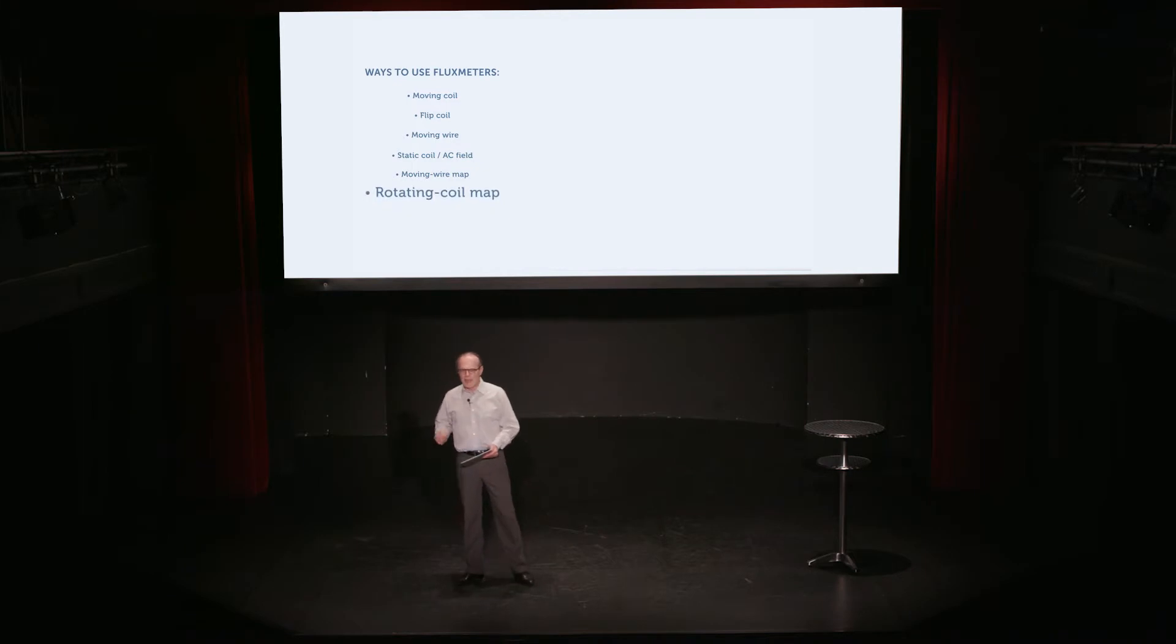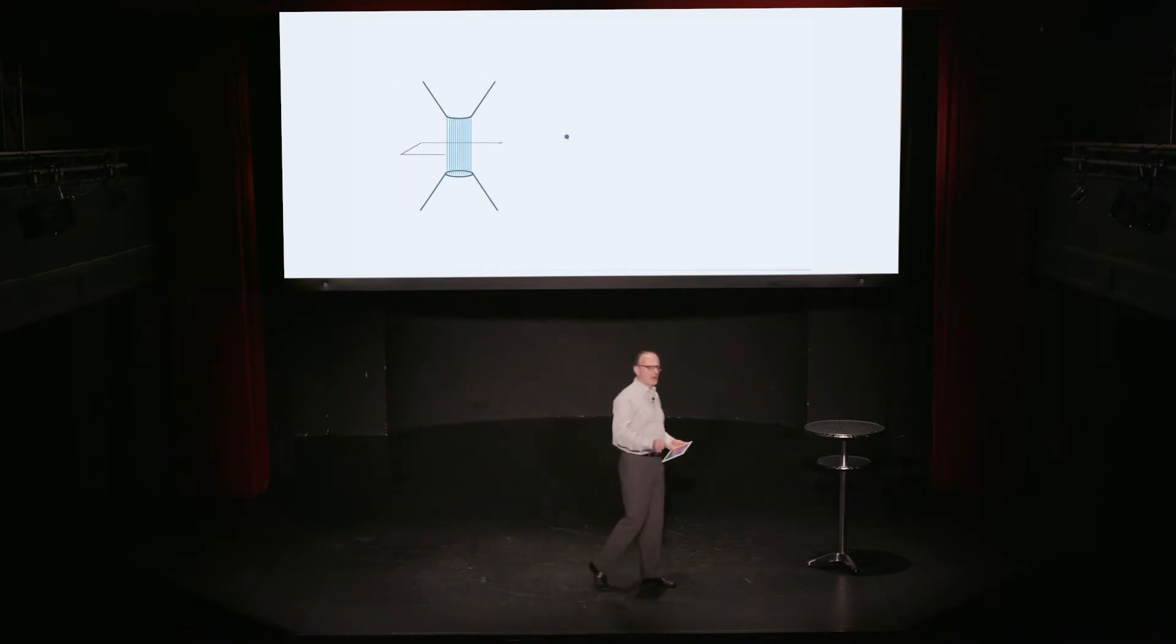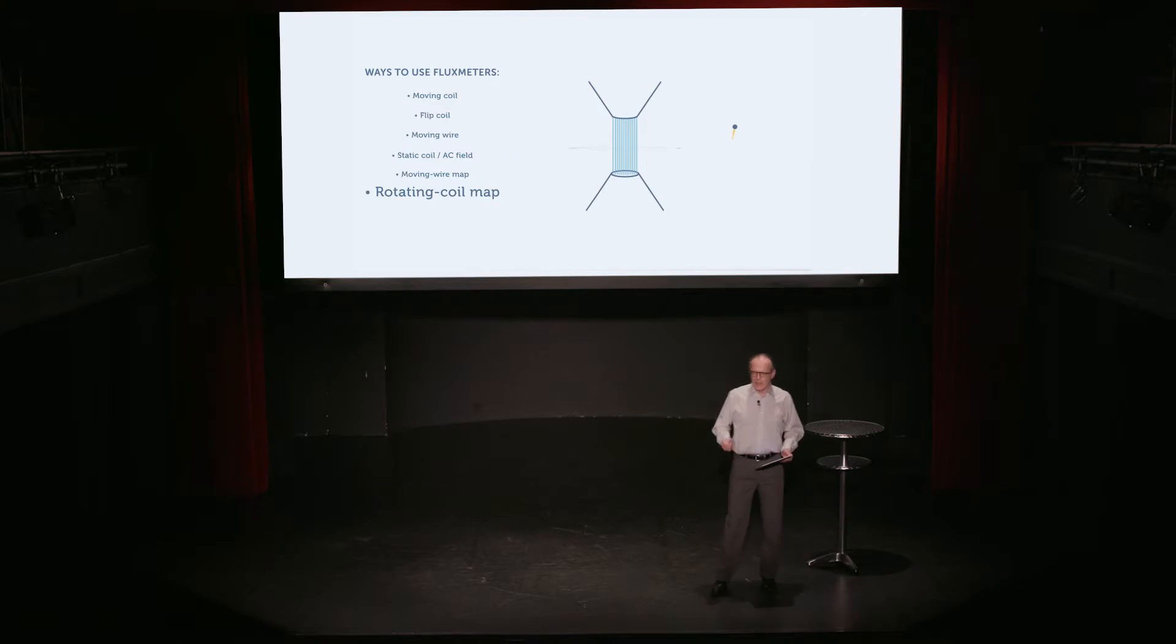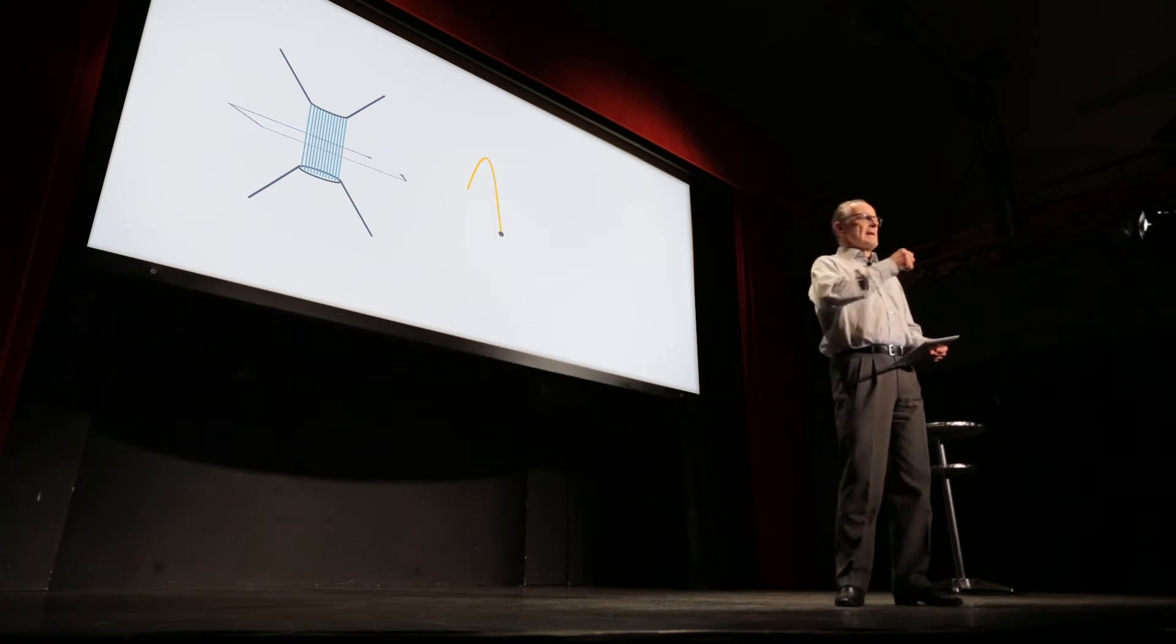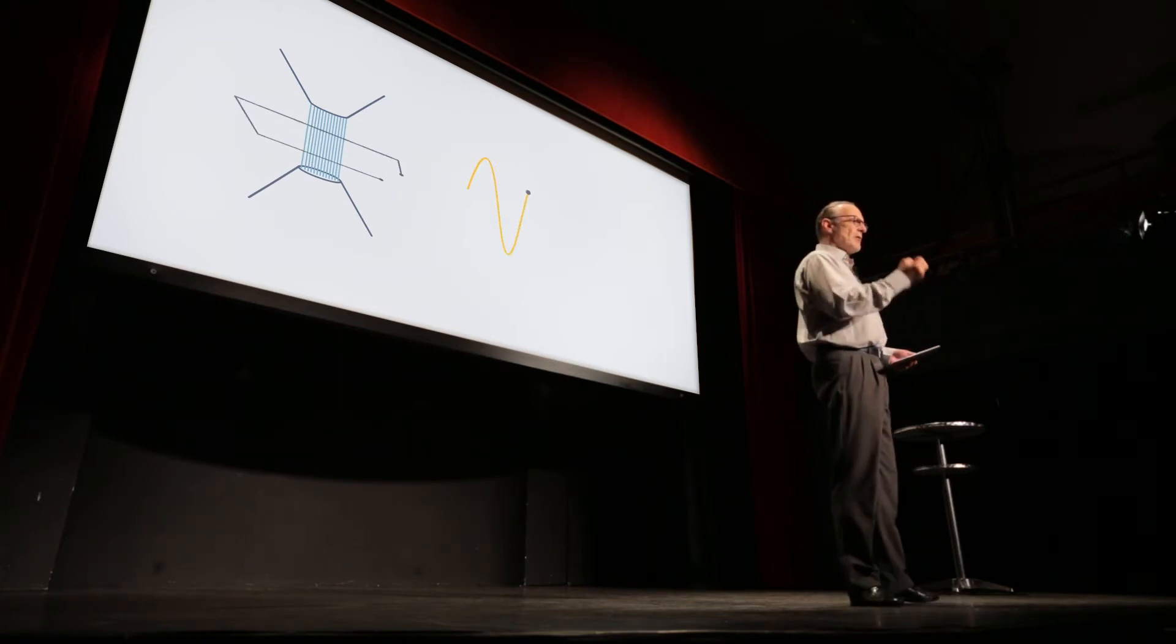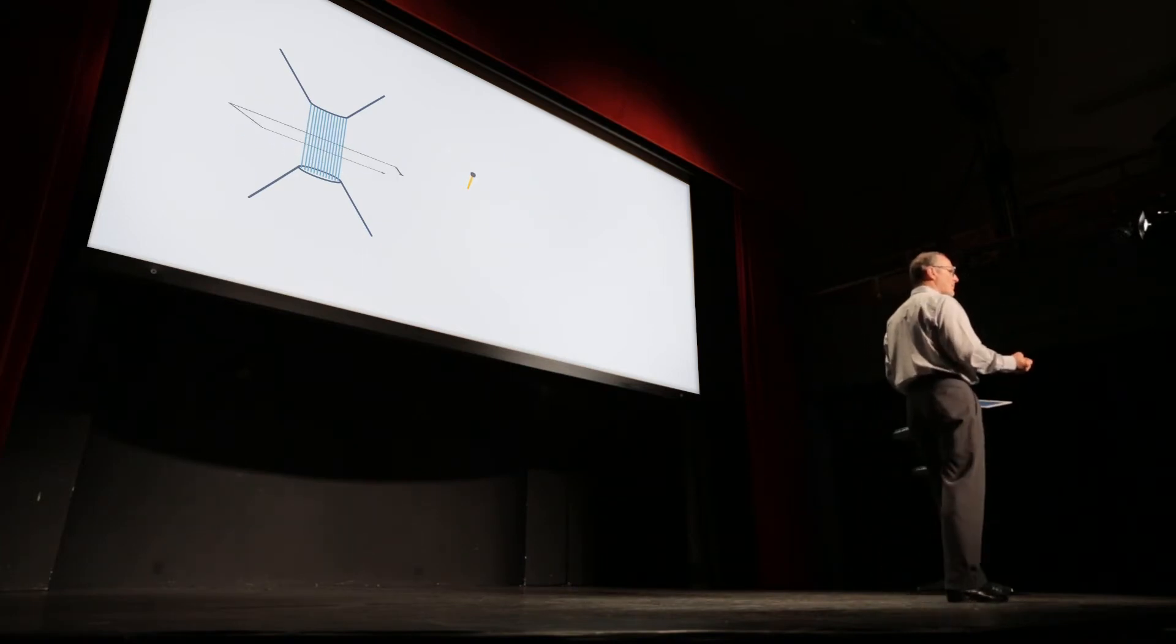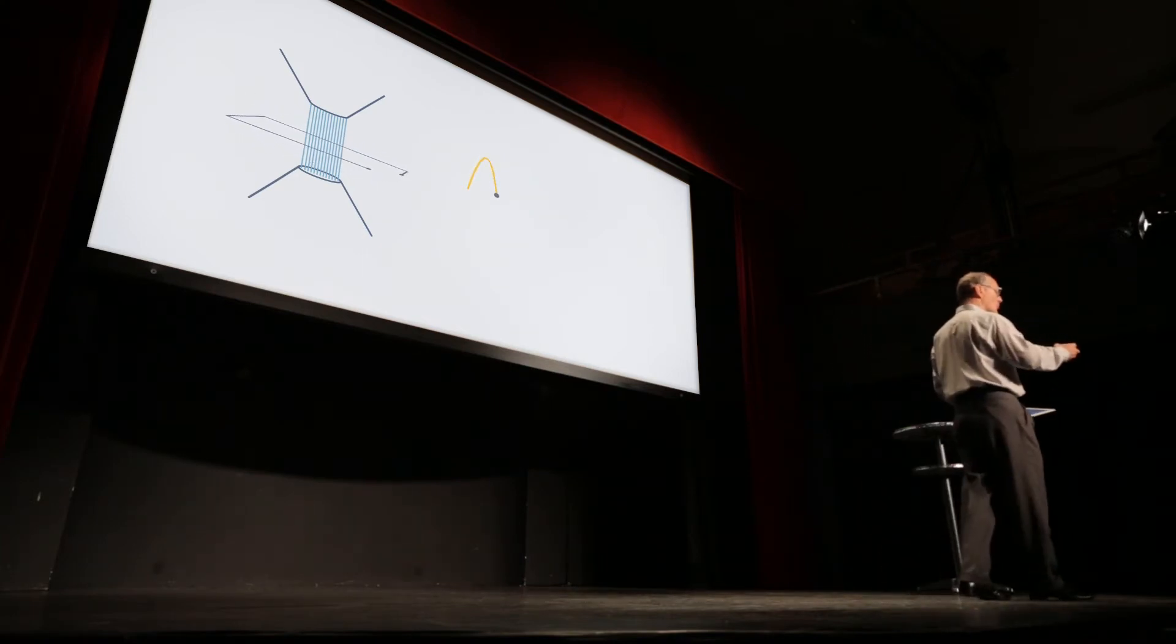This slide shows an application that is very common in particle accelerator labs. Here, we're not talking about a field map in a linear dimension. We're talking about a field map as you rotate a coil in the gap of a magnet.